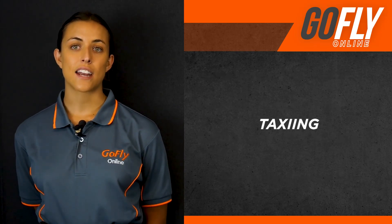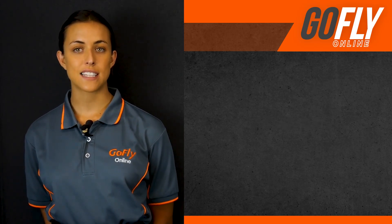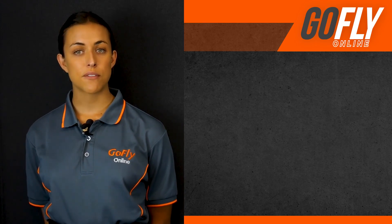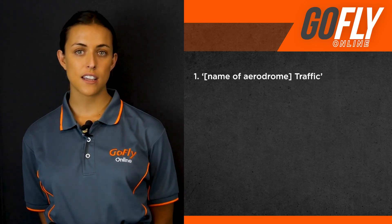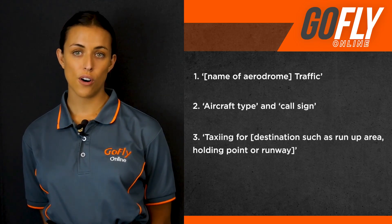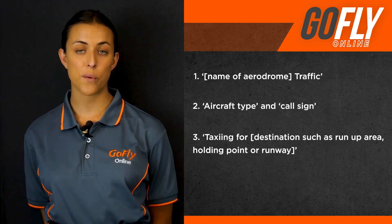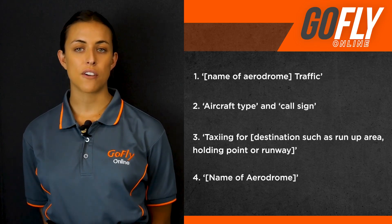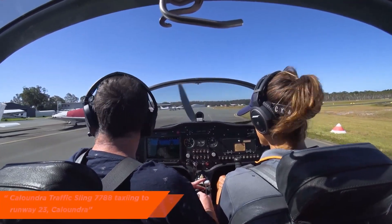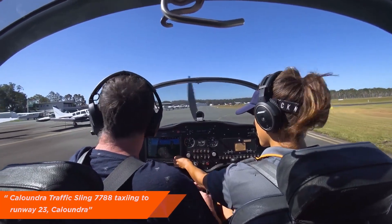When taxiing at a non-controlled aerodrome, it is important for the pilot to give a taxi call before they start taxiing. The radio call should include the name of the aerodrome, followed by traffic, aircraft type and call sign, taxiing for destinations such as run-up area, holding point or runway, and finished with the name of the aerodrome. An example would be: Caloundra traffic, Sling 7788, taxiing to runway 23, Caloundra.